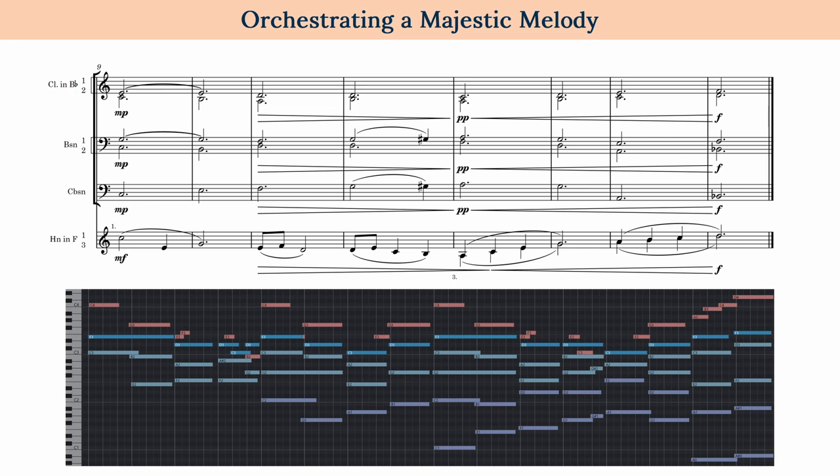Notice that I waited to bring in the lowest octave in contrabassoons until the second half, just trying to give this passage some shape and development. But overall it's very simple — just two layers: a foreground and a background.